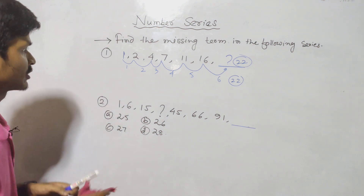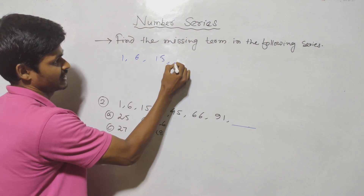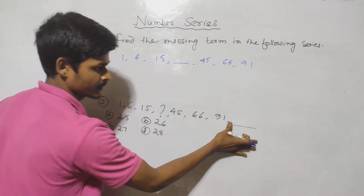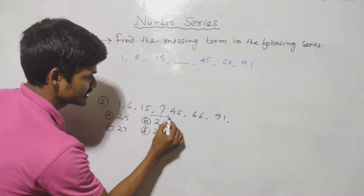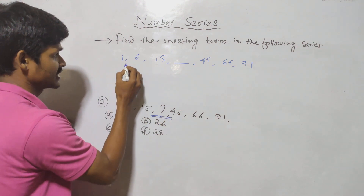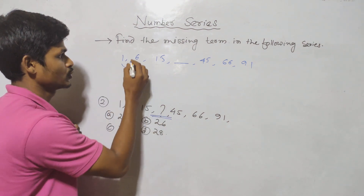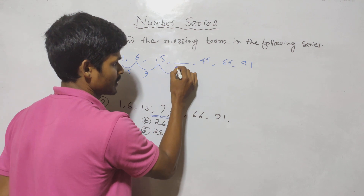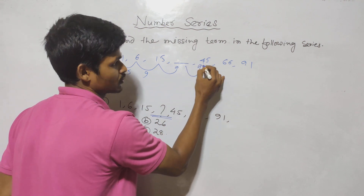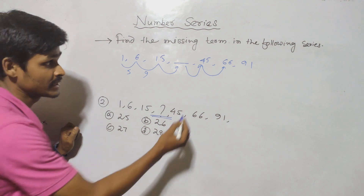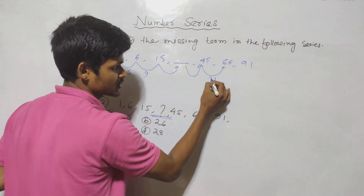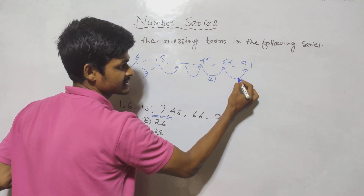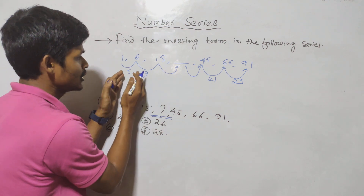The next question: 16, 15, gap, 45, 66, 91. This number: 16 minus 15 equals 1. Then 45 minus 66 equals 21. The middle gaping — 45 minus 66 means 6 minus 5 equals 1, 6 minus 4 equals 2, giving 21. 66 minus 91 means 8 minus 6 equals 2. This is the middle gaping.